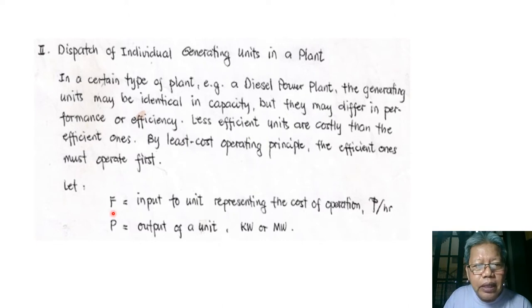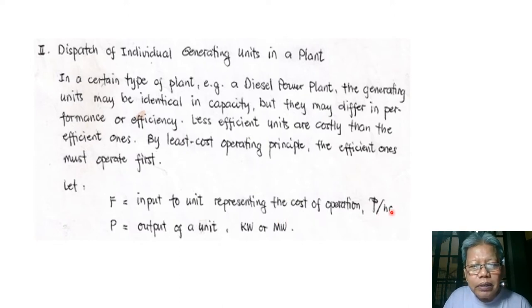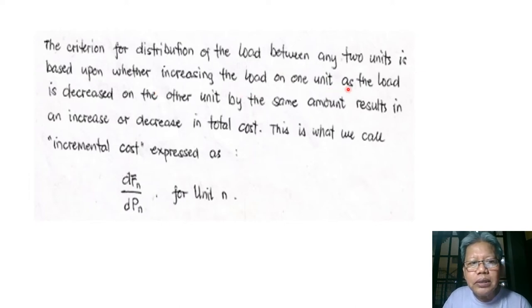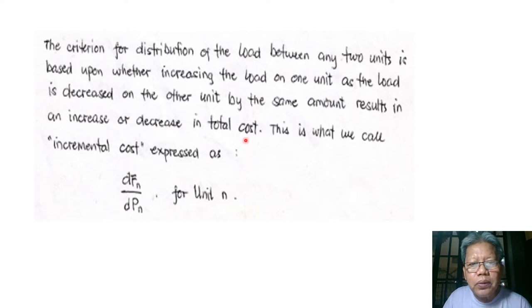Let f be the input to the unit representing the cost of operation in pesos per hour, and let p be the output of the unit in kilowatts or megawatts. The criterion for distribution of load between any two units is based on whether increasing the load of one unit as the load is decreased on the other by the same amount results in an increase or decrease in total cost. This is called the incremental cost, expressed as df_n / dp_n for unit n.